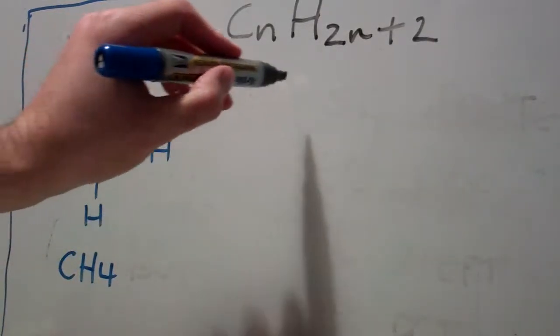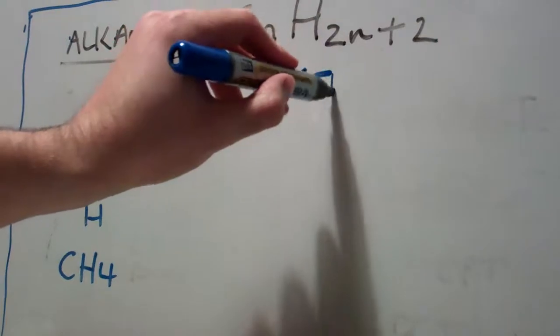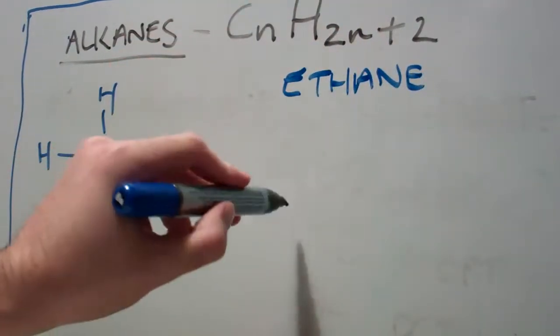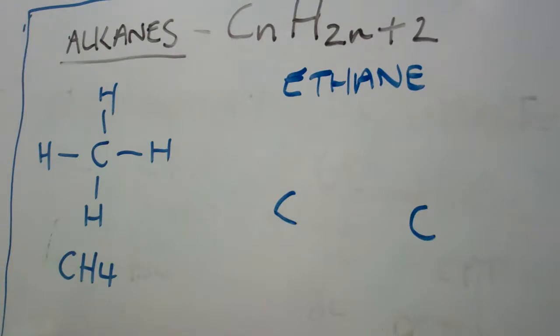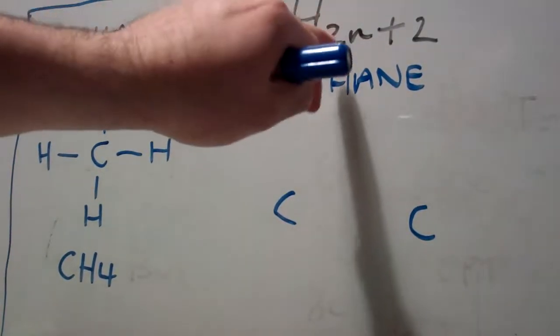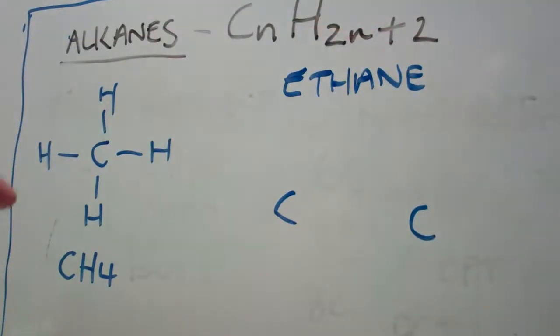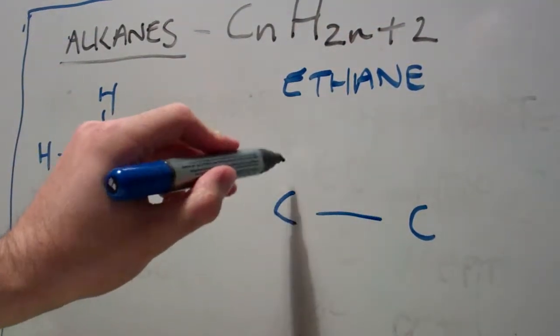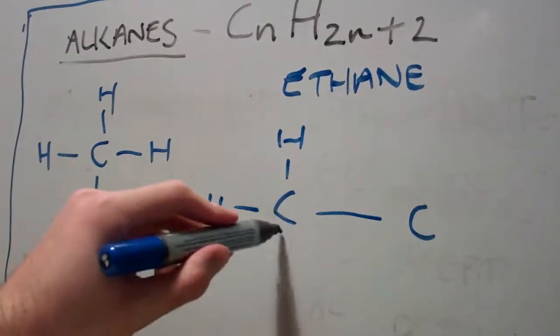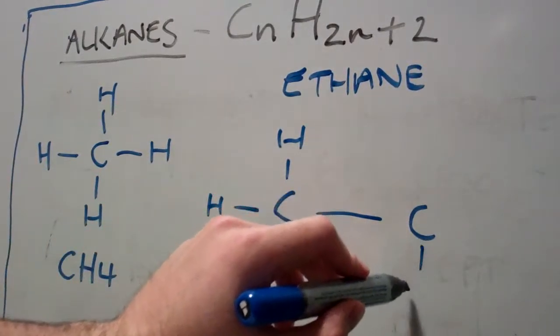If we look at ethane, we've got two carbons. Therefore we have got 2 times 2 is 4 plus 2 is 6 hydrogens. And they're just evenly dispersed around each carbon.